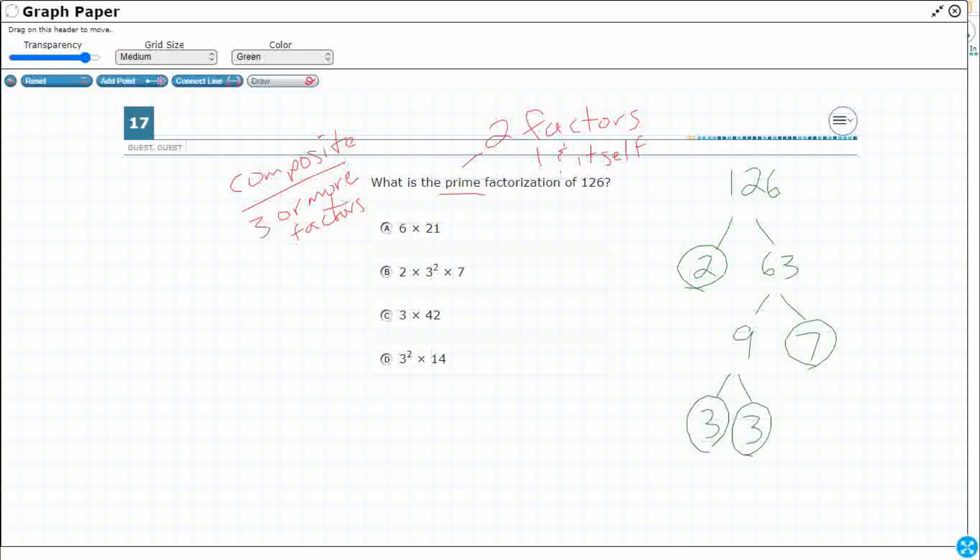What you need to do is you need to rewrite it in order. So, I've got a two times... Now, there's two different threes. I'm not going to write times three times three. I'm just going to do times three squared. That's how you correctly show it in prime factorization. The exponent shows you how many threes there are, because that just means three times itself two times, and then you'd bring that seven. So, then it looks like, there we go. Our answer here is B.